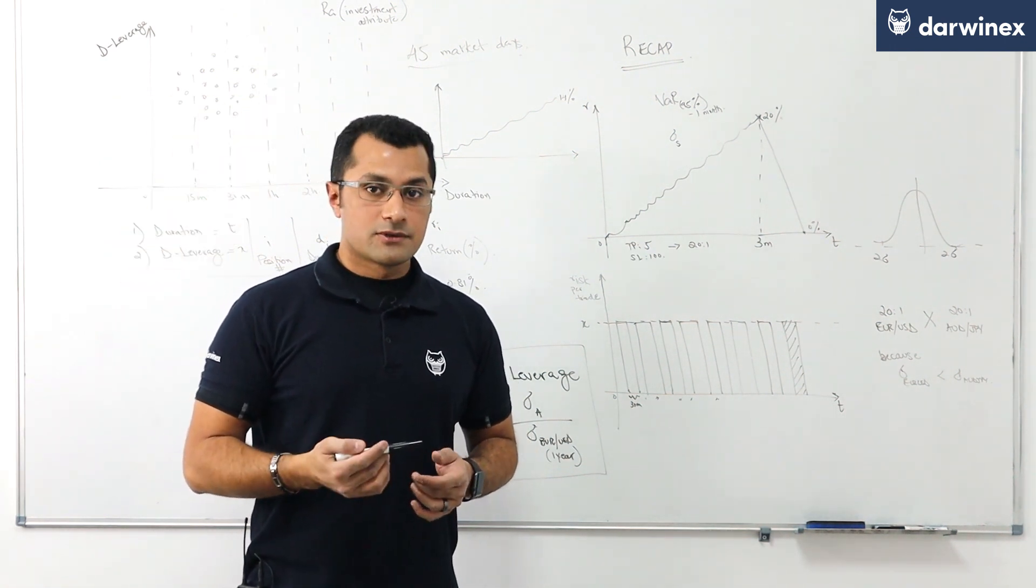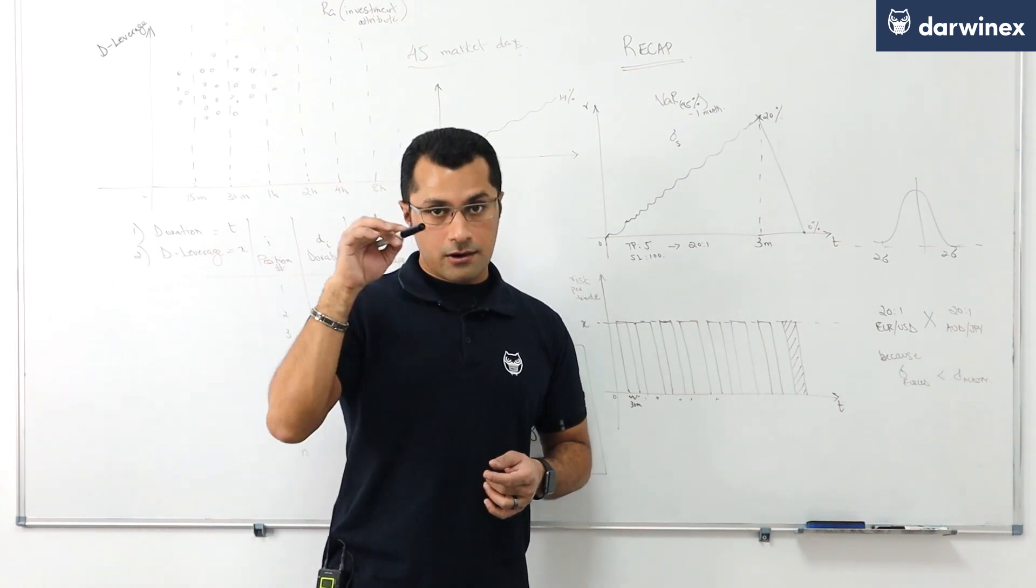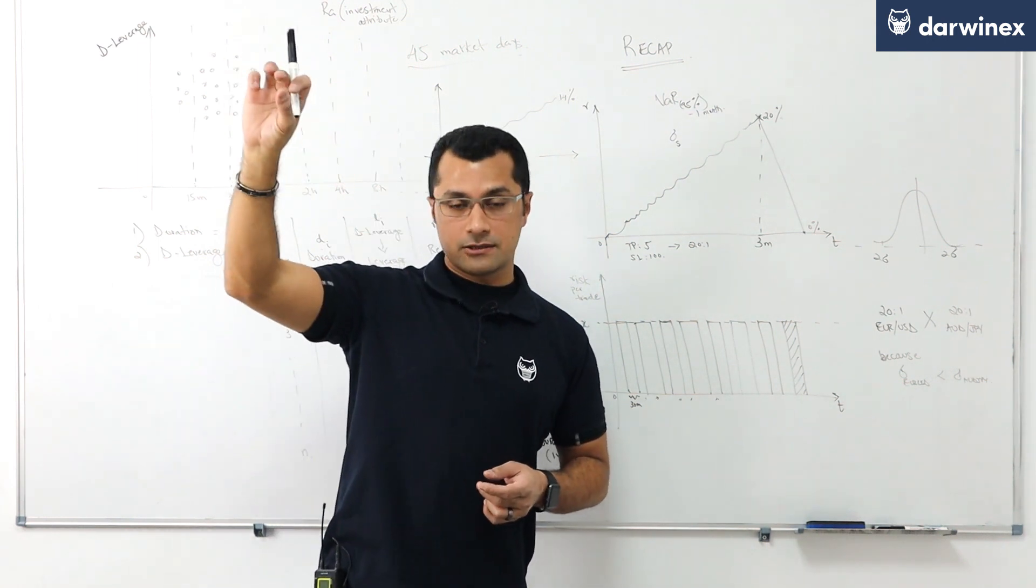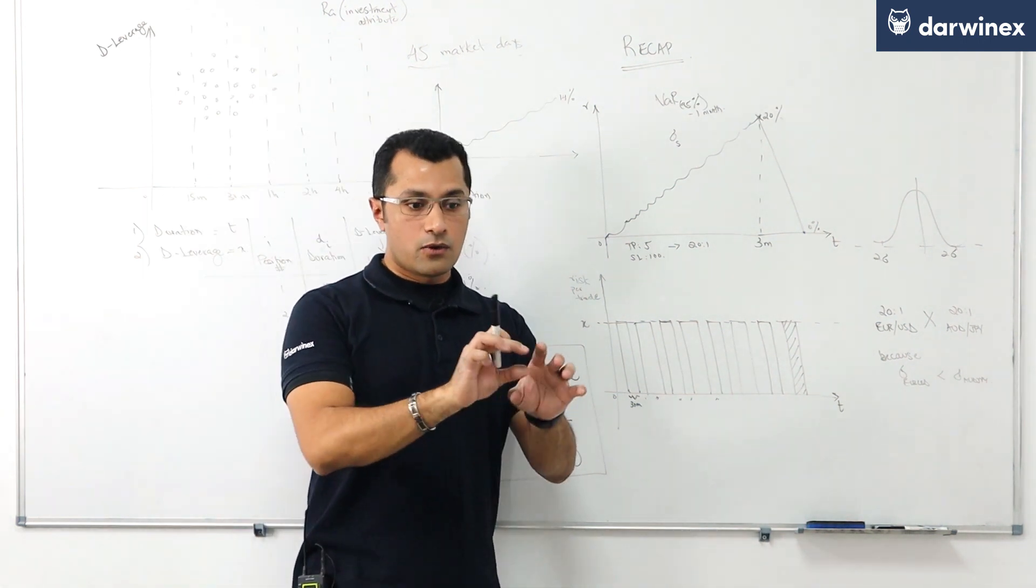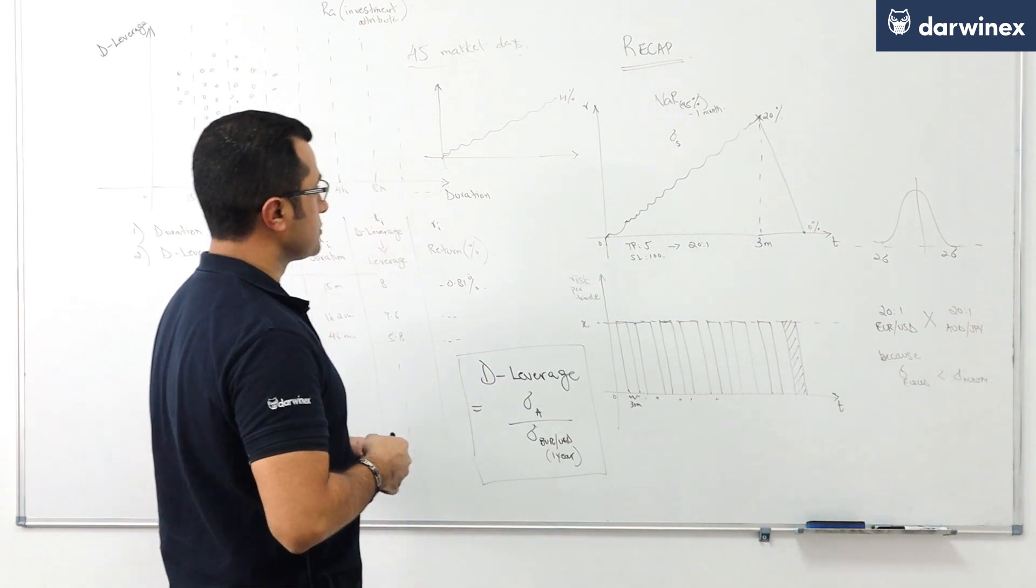So if you've been to the DarwinX platform on any Darwin listing you'll have investment attributes listed for the given Darwin and one of those will be risk adjustment called RA that is available as a button on the top right at this point in time of any given Darwin listing or available as a tab at the bottom should you click on investable attributes.